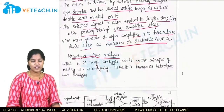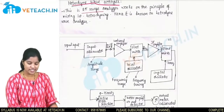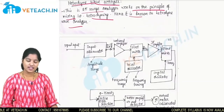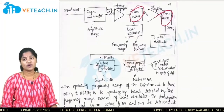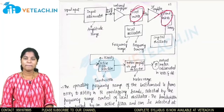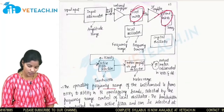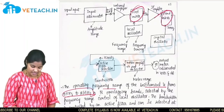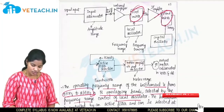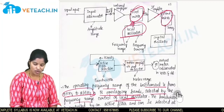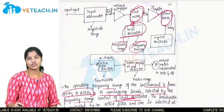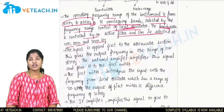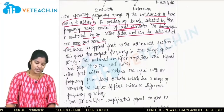The second type is the heterodyne wave analyzer, which is an RF range analyzer. It works on the principle of mixing, that is heterodyning the signal — hence it is known as a heterodyne wave analyzer. It has a first mixer and a second mixer. The operating frequency range is from 10 kHz to 18 MHz, in 18 overlapping bands selected by the frequency range control of the local oscillator. The bandwidth is controlled by an active filter and can be selected as 200 Hz, 1000 Hz, or 3000 Hz.